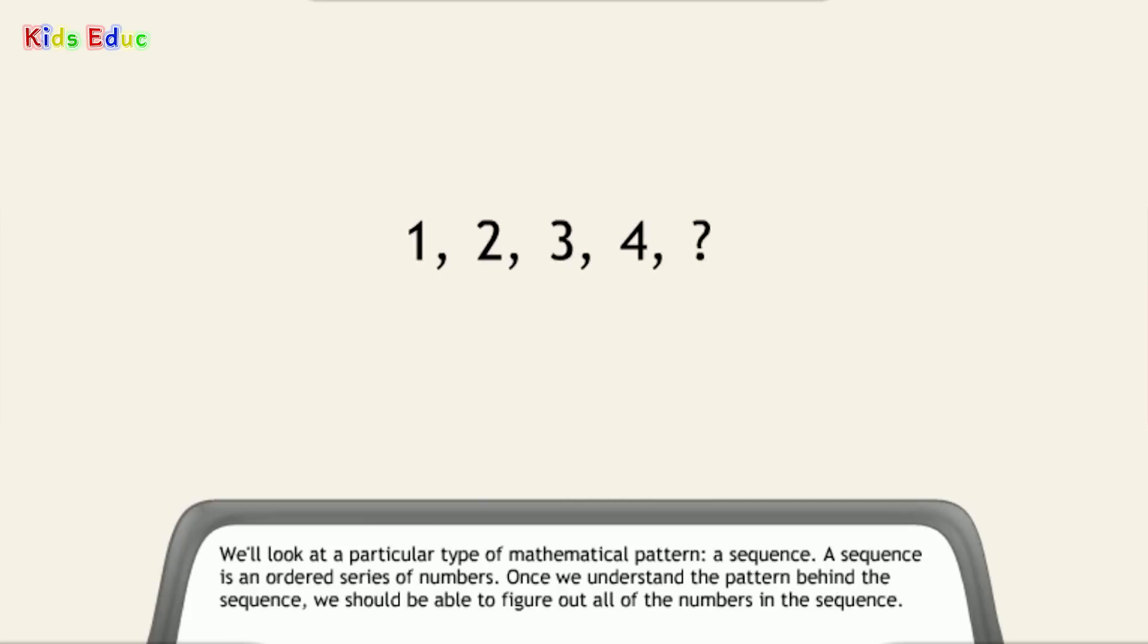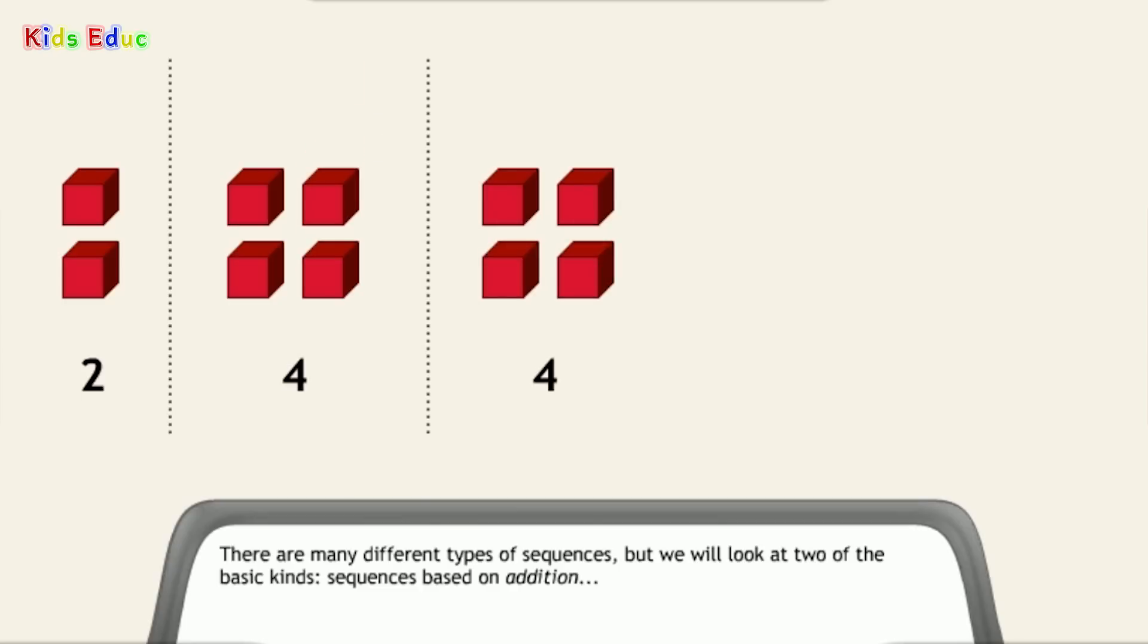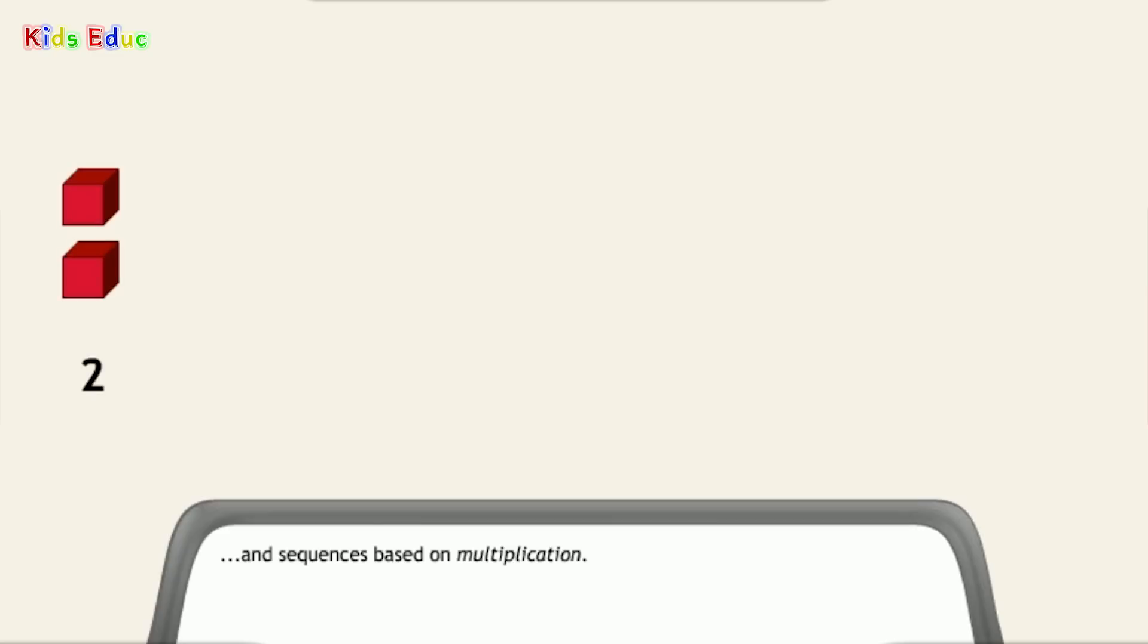A sequence is an ordered series of numbers. Once we understand the pattern behind the sequence, we should be able to figure out all of the numbers in the sequence. There are many different types of sequences, but we will look at two of the basic kinds: sequences based on addition, and sequences based on multiplication.